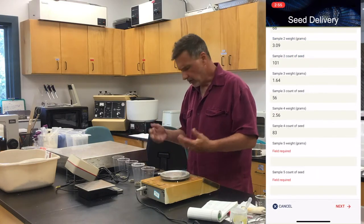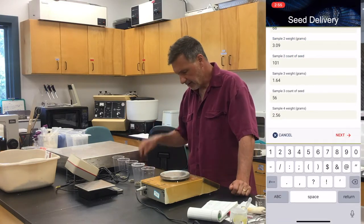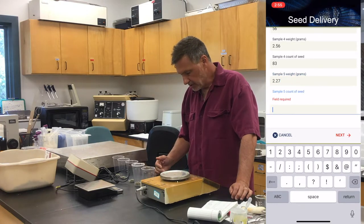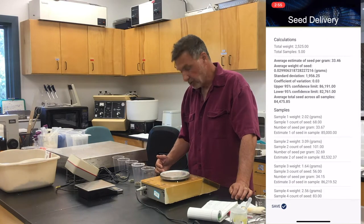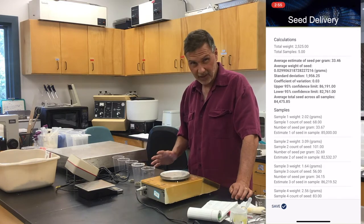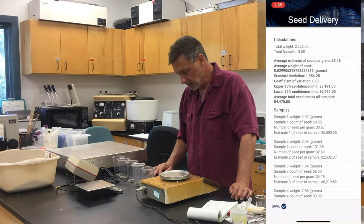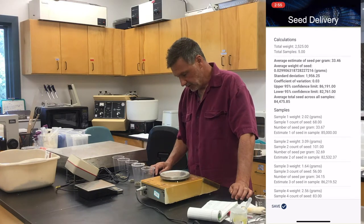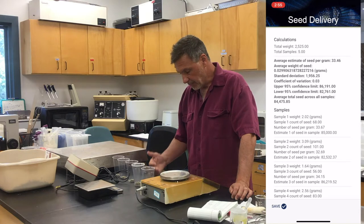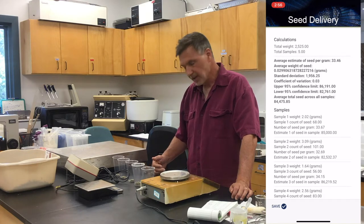These are pretty well graded, so they're all around the same size. You don't see a lot of variation here, and you can see that in the calculations. So it lets us know that the average estimate of seed per gram is about 33.46 seed per gram. It gives us an average weight of the seed — you have to take that with a grain of salt, because there may be things other than oysters in here, including a number of doubles that could skew that. It gives us a measure of the standard deviation and the coefficient of variation, the upper confidence limit, and the lower confidence limit.